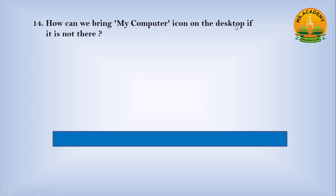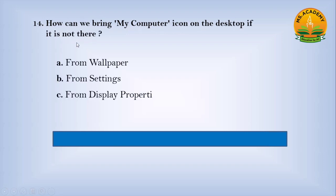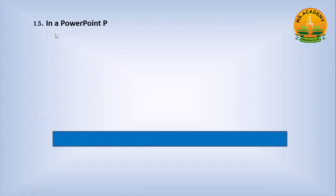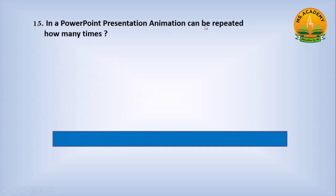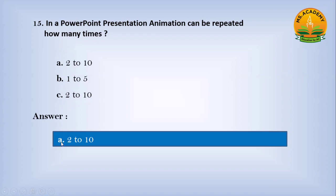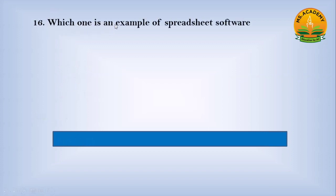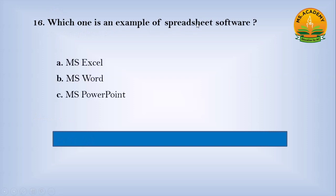How can we bring the My Computer icon onto the desktop if it is not there? Option A: from wallpaper, option B: from settings, option C: from display properties. Answer: C — from display properties. In a PowerPoint presentation, animation can be repeated how many times? Option A: 2 to 10, option B: 1 to 5, option C: 2 to 10. Answer: A — 2 to 10.